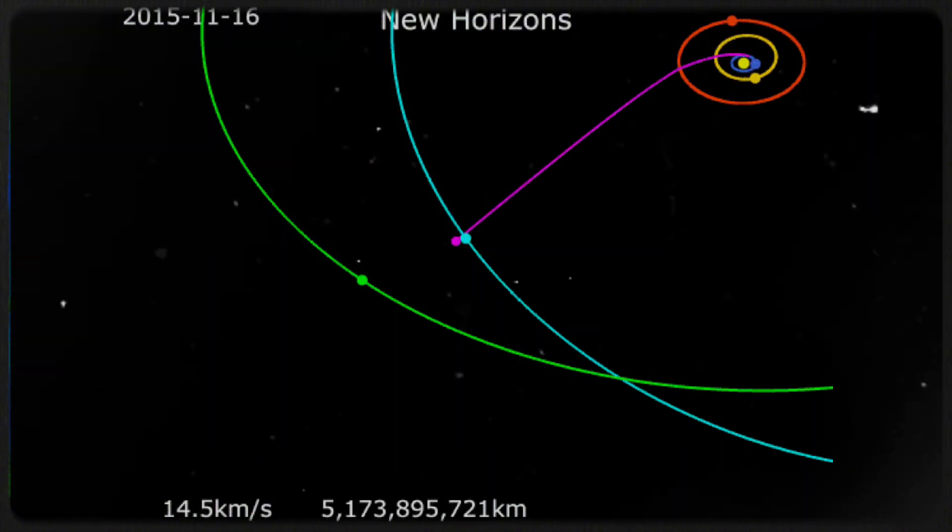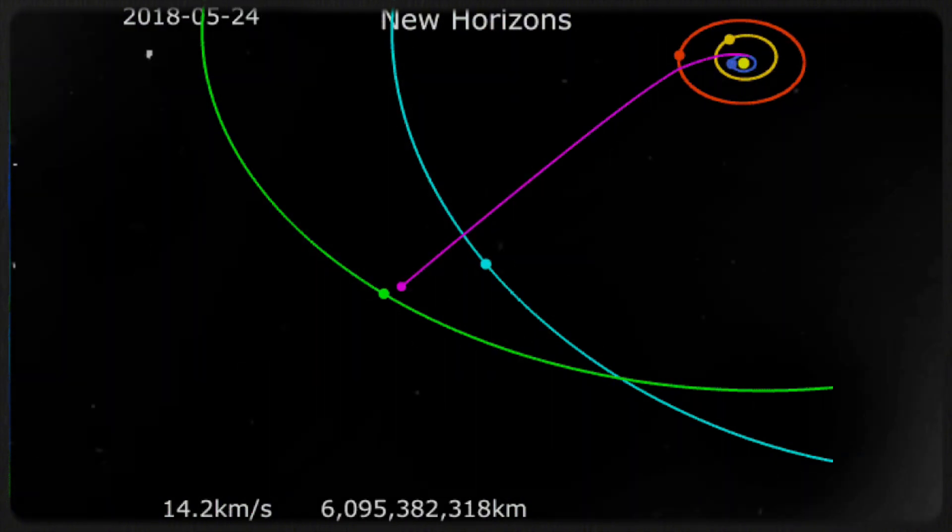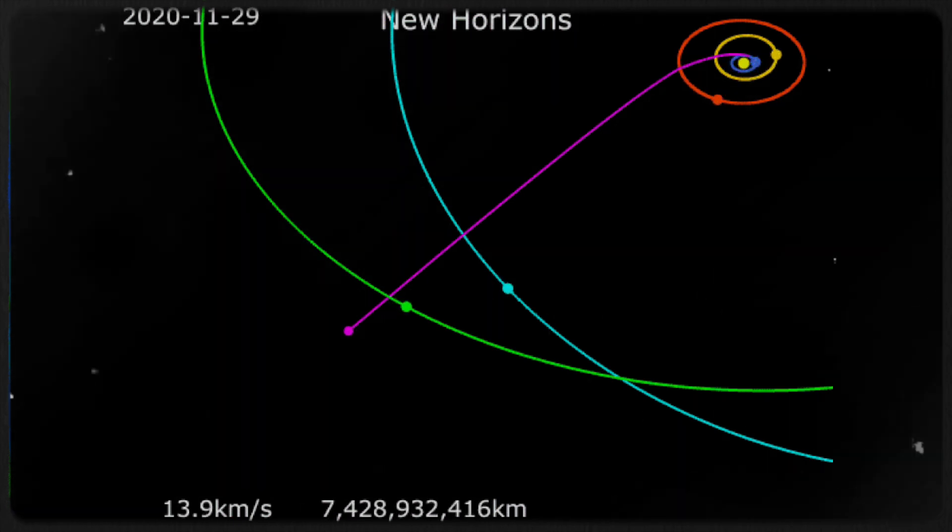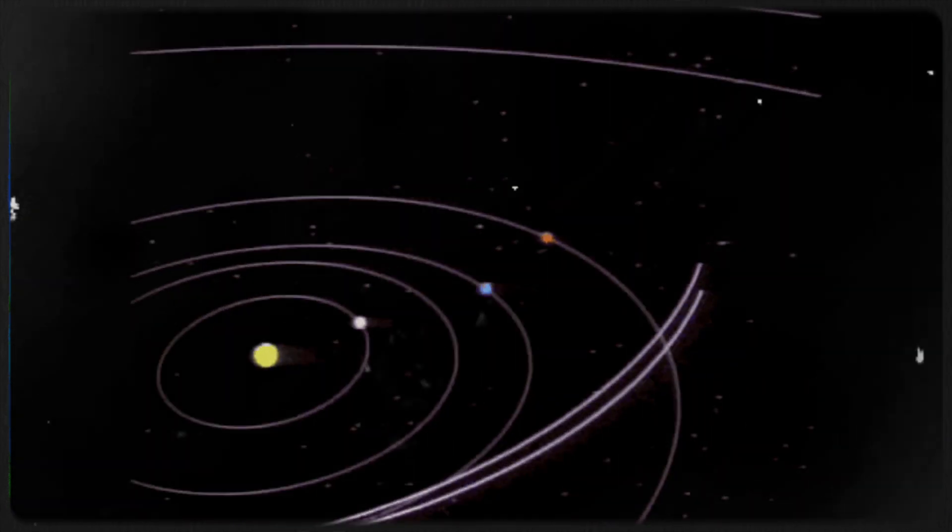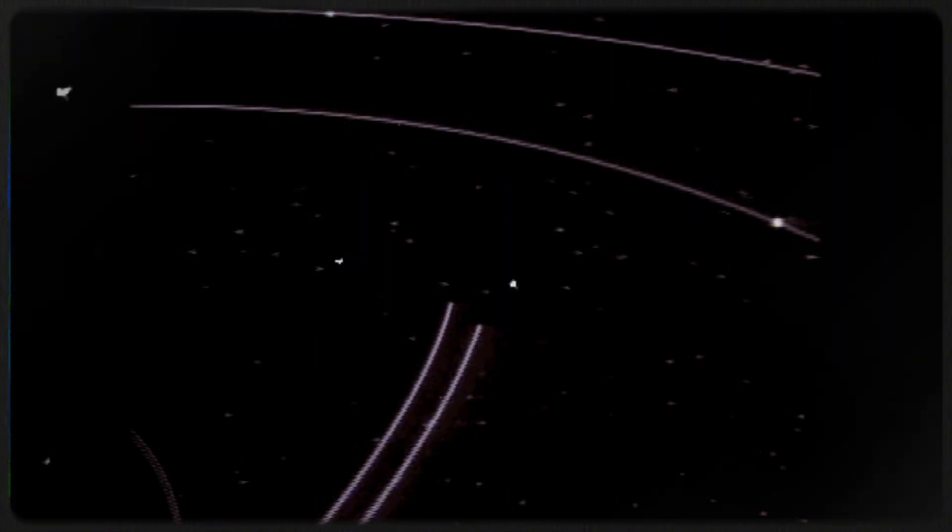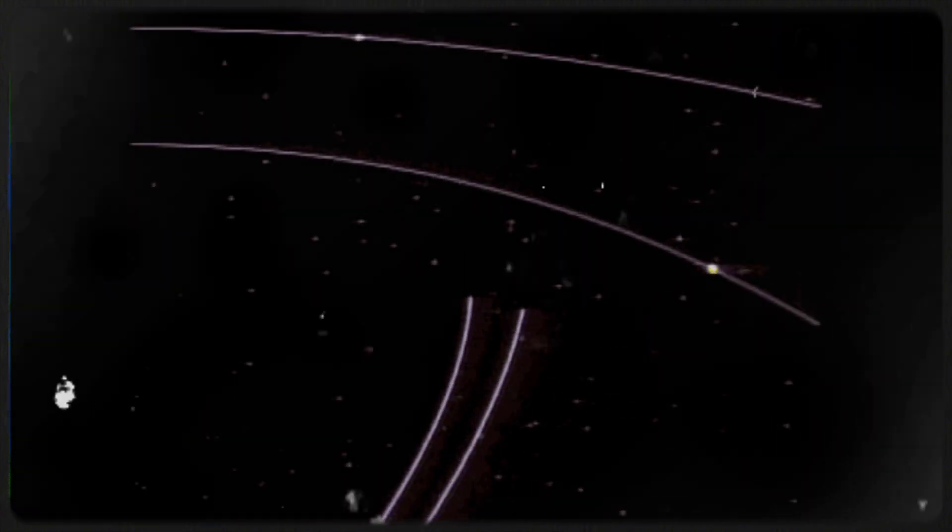According to our current understanding, they have crossed into interstellar space, becoming the first human-made objects to do so, a distinction they will hold for many decades. This impressive record is even more remarkable considering the Voyager missions were originally intended to last only four years.